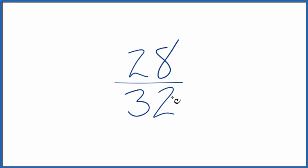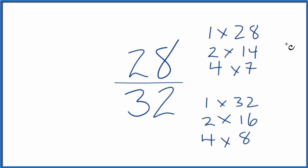So the factors for 28 and 32 look like this. As I look at the factors for 28 and 32, it looks like the greatest common factor is 4.